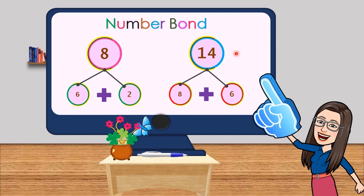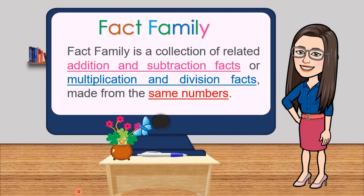Number bond has its corresponding fact family. Fact family is a collection of related addition and subtraction facts, or multiplication and division facts, made from the same numbers.